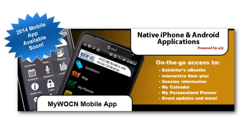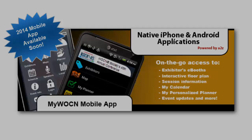You can take all of these tools on the go with the MyWOCN mobile app for your iPhone, iPad, and Android or other internet-enabled mobile device. The mobile app allows you to view and update in real-time your Personalized Planner, browse the interactive event map, and add preferred exhibitors to your map. You can also view sessions and add your favorites to the calendar in your Personalized Planner and then sync those appointments with your mobile calendar.